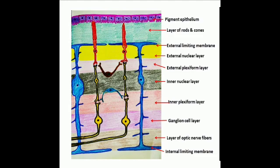Outermost layer is pigment epithelium, followed by layers of rods and cones, external limiting membrane, external nuclear layer, and external plexiform layer.